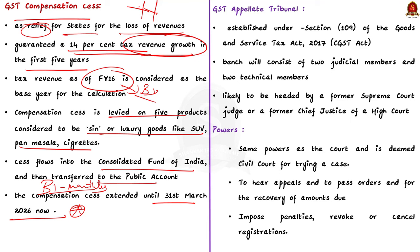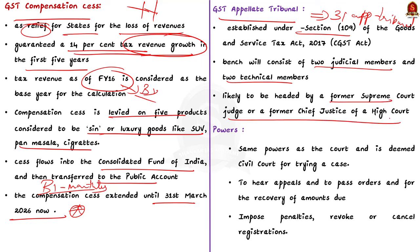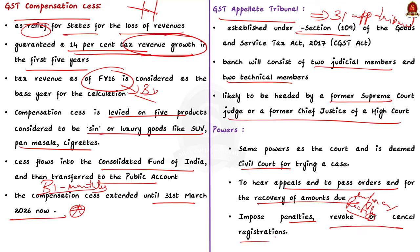Recently, the Finance Minister notified the constitution of 31 Appellate Tribunals across 28 states and 8 union territories for Goods and Service Tax. Section 109 of the GST Act 2017 empowers the Union Government to constitute these tribunals. Benches will consist of two judicial members and two technical members. The tribunal will be headed by a former Supreme Court judge or former Chief Justice of a High Court. As per the Code of Civil Procedure 1908, the Appellate Tribunal holds the same power as a civil court. It has powers to hear appeals, pass orders, recover dues, impose penalties, and revoke or cancel registrations.